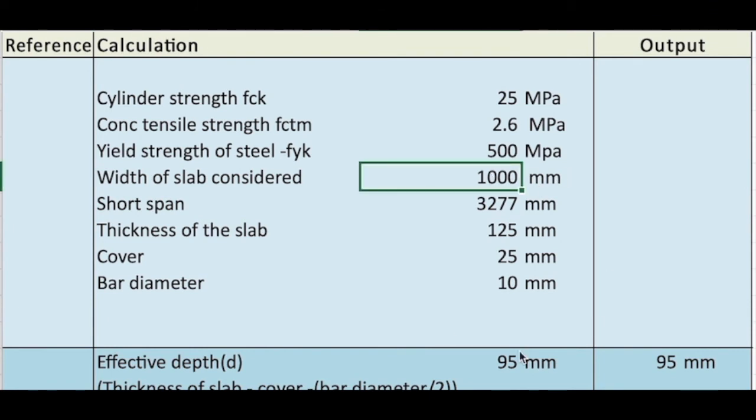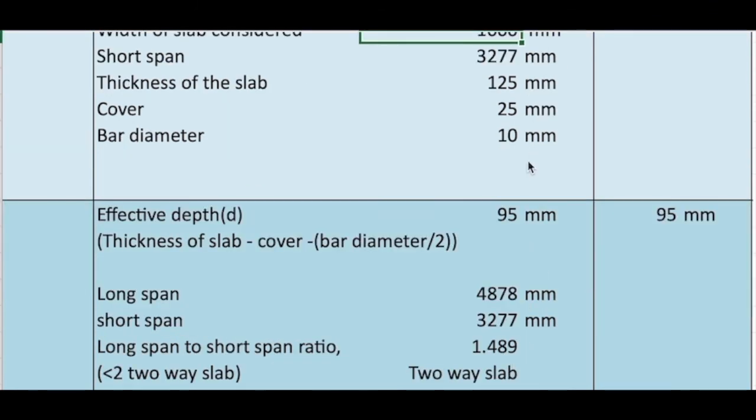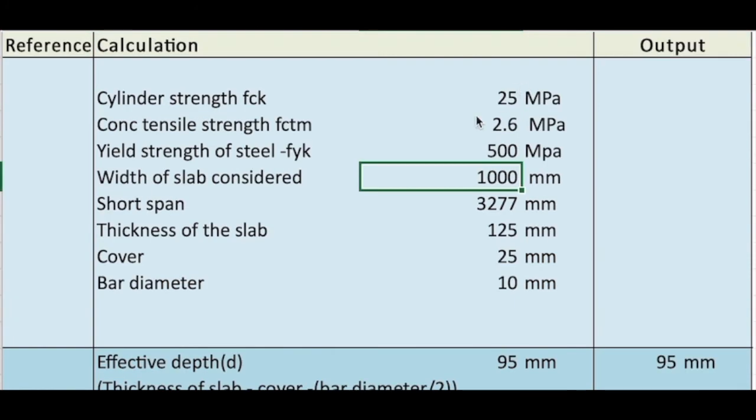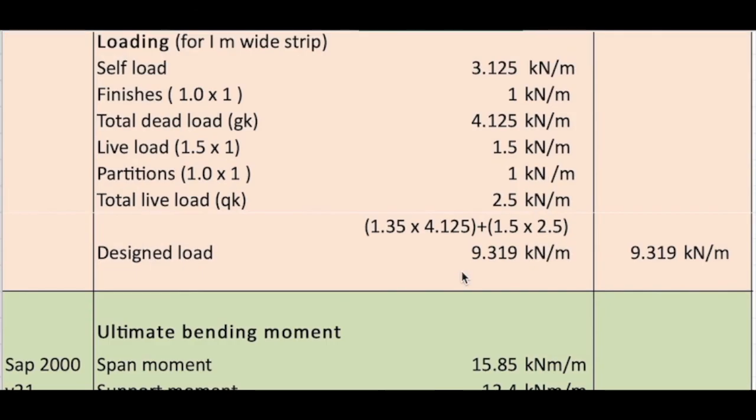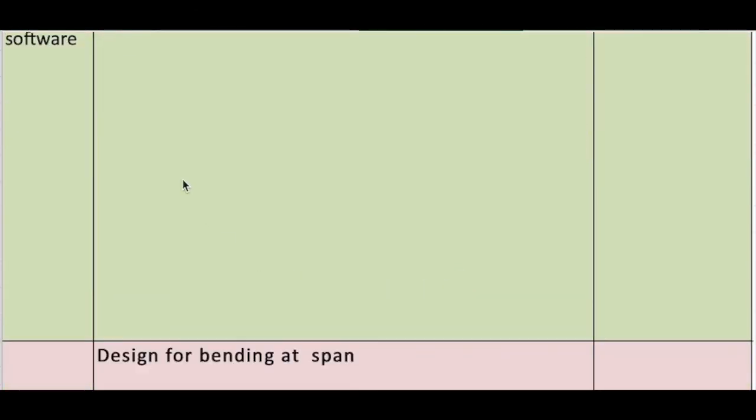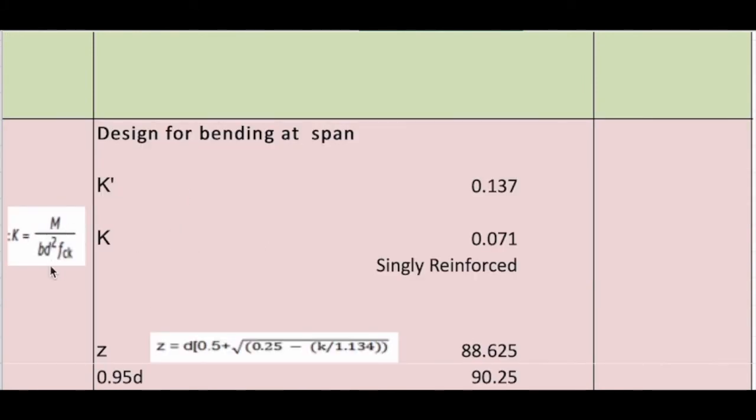d we found out as effective depth, and fck is 25 MPa. So K is M over bd²fck. We found 0.071, which is less than K' so it is singly reinforced.